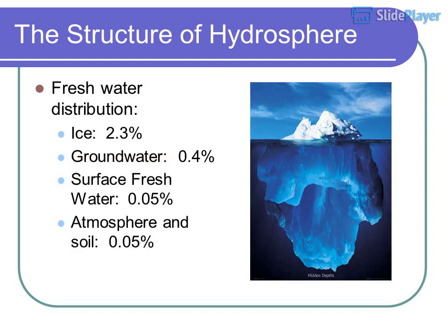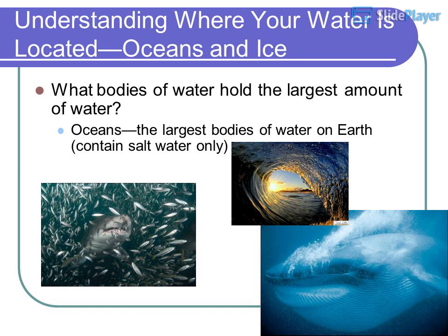Fresh water distribution: ice accounts for 2.3 percent, groundwater 0.4 percent, surface fresh water 0.05 percent, and atmosphere and soil 0.05 percent. Understanding where your water is located — oceans and ice hold the largest amount of water.